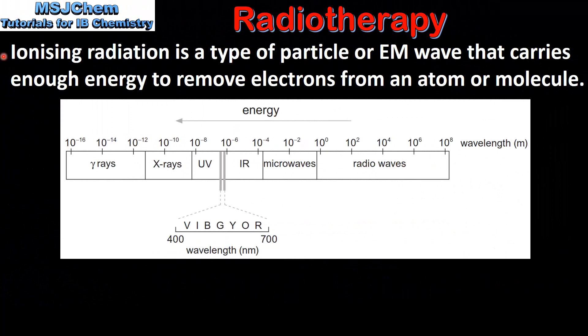Next we look at ionizing radiation. Ionizing radiation is a type of particle or electromagnetic wave that carries enough energy to remove electrons from an atom or molecule.